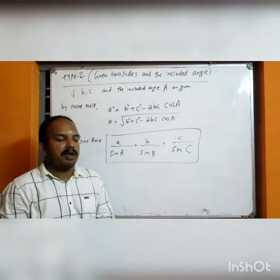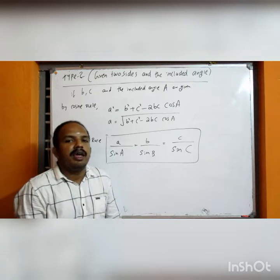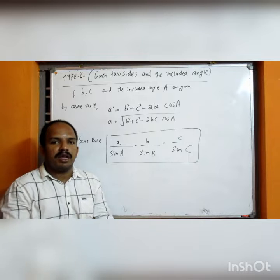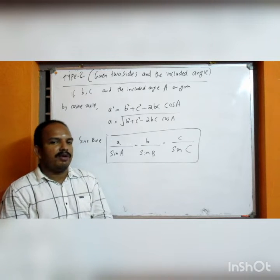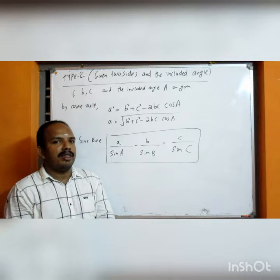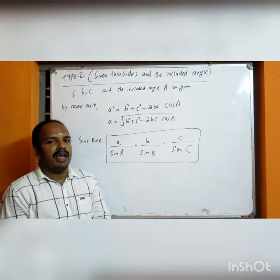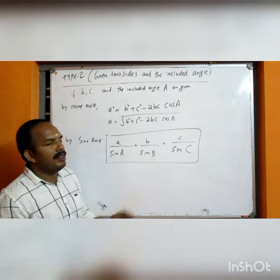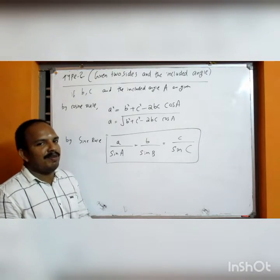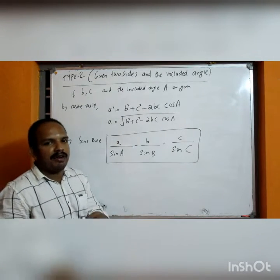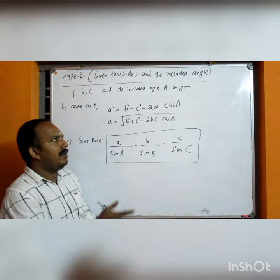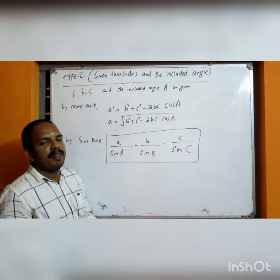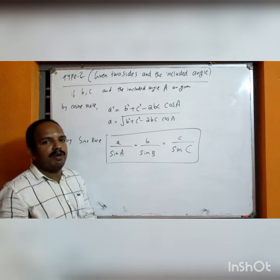Let's start with the Solution of Triangle. The first type involves 3 sides of the triangle, and another type is 1 side and 2 angles of the triangle. This is the first and second type. We will also cover the area of the triangle, then the Limit topic.